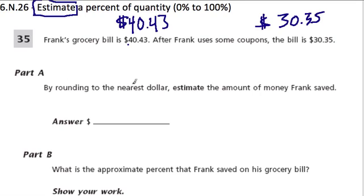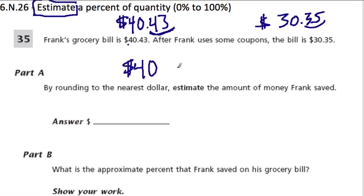We're rounding to the nearest dollar, so we'll use the cents in both cases to either round up or down. Since neither value is 50 cents or above, we round down — we leave the whole number where it is. So the grocery bill rounds to $40, and after coupons it rounds to $30.